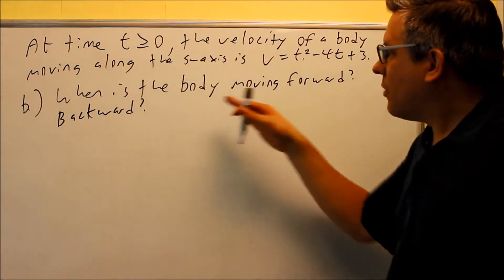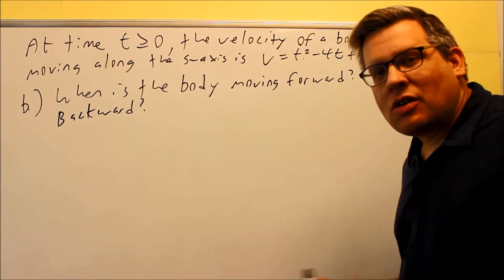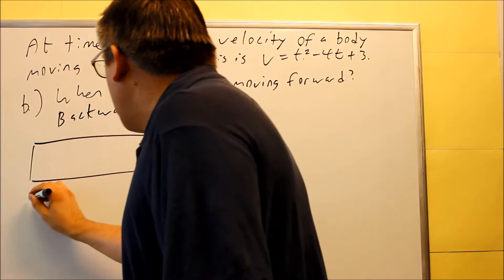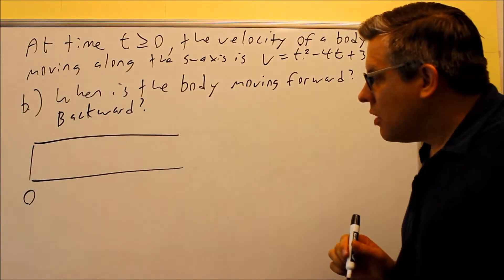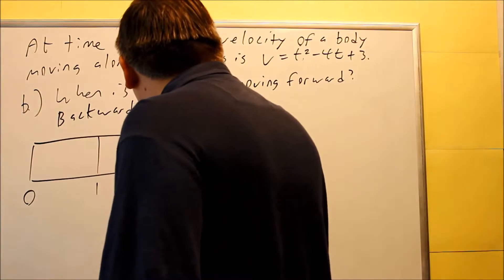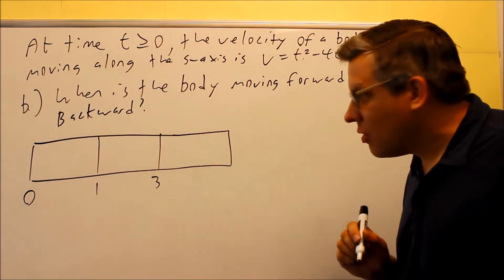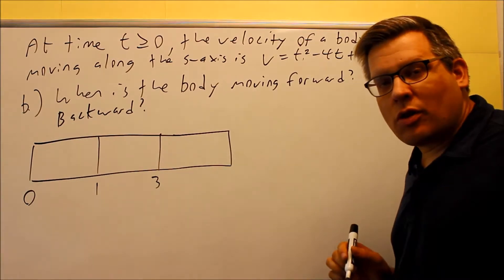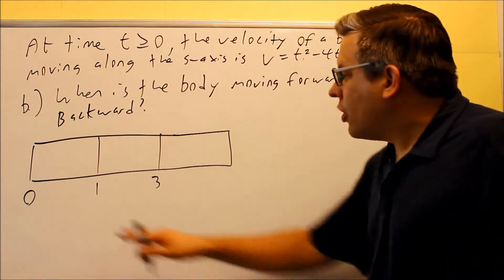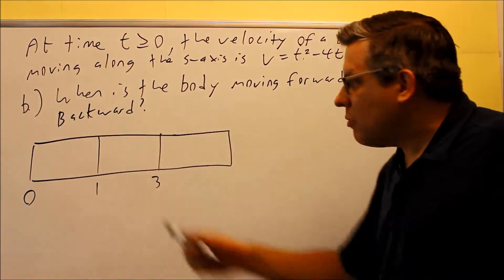Part B: when is the body moving forward and when is it moving backward? We already found in Part A that it's not moving at 1 and 3 seconds. What you want to do here is set up a table. I'm going to start with 0 because that's where the time begins, then put in 1 and 3 seconds. This last part keeps going forever, so we don't have an end point. I need to pick a test point in each interval to find out whether it's moving in the positive or negative direction.